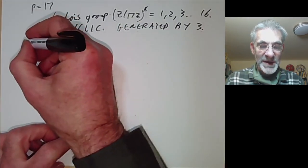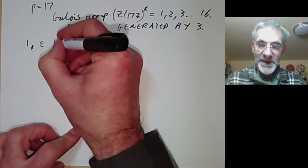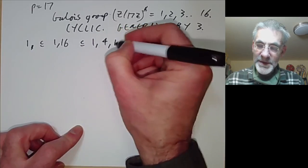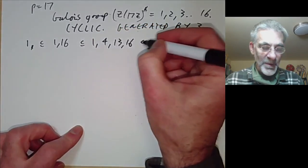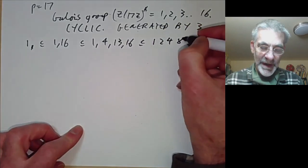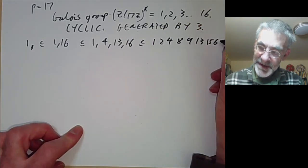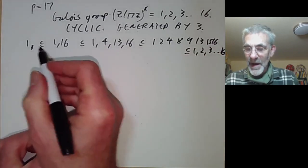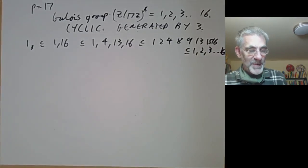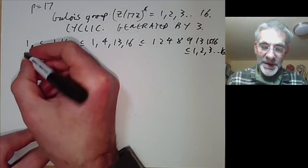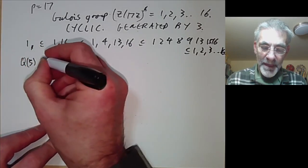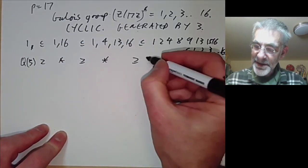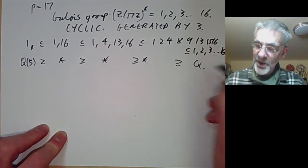Let's write out these subgroups explicitly. We have the subgroup {1}, contained in {1, 16}, contained in {1, 4, 13, 16}, contained in {1, 2, 4, 8, 9, 13, 15, 16}, contained in the whole group. Corresponding to these subgroups, we get a chain of fixed fields: Q ⊂ K₁ ⊂ K₂ ⊂ K₃ ⊂ Q(zeta). What we want to do is figure out generators for these fields explicitly and write each of them in terms of square roots of the previous field.